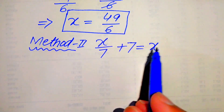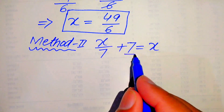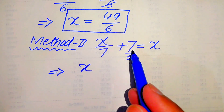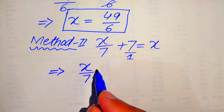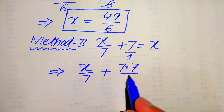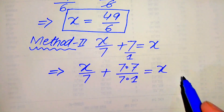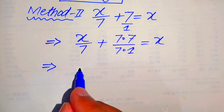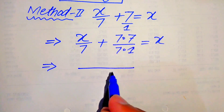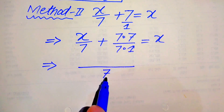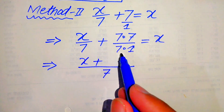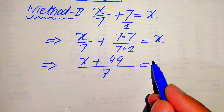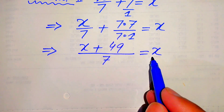First we take the LCM of the left-hand side. The denominator of the second term is 1, so we multiply and divide that term by 7, giving x over 7 plus 7 times 7 over 7 times 1 equals x. The denominators are now the same, so the LCM is 7. Cancelling, we get x plus 49 over 7 equals x.